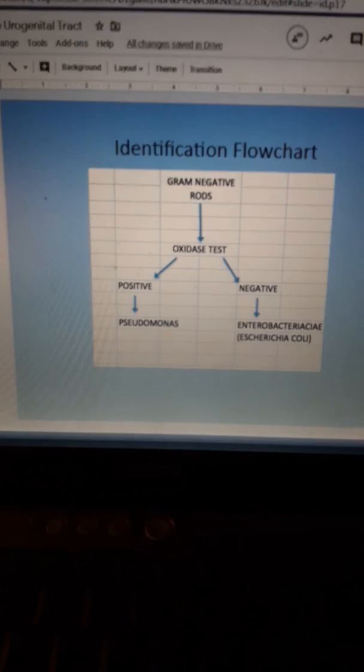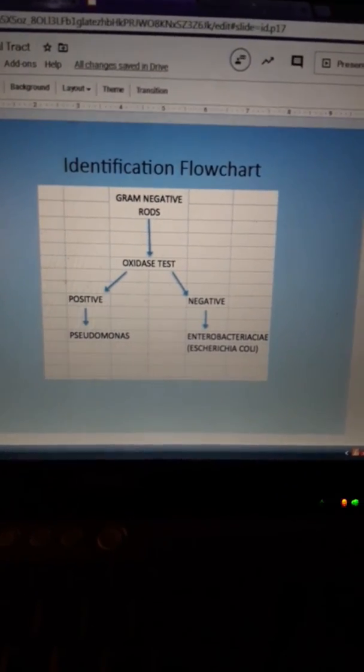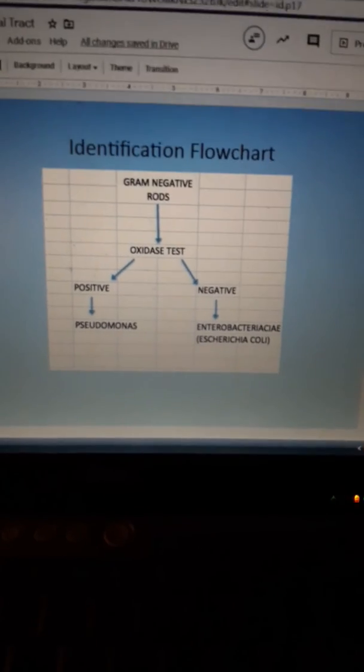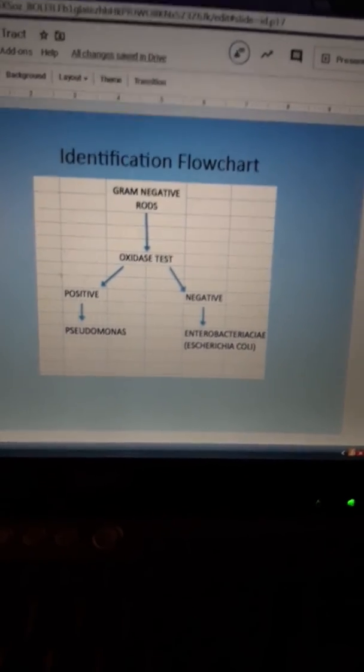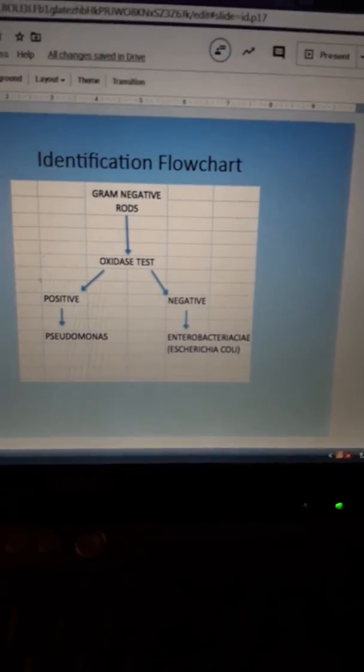So again, by doing an oxidase you can tell if it's Pseudomonas aeruginosa. If it's negative, that means it's part of the Enterobacteriaceae big group, and the one you so far know we talked about is E. coli.